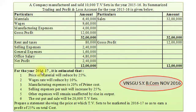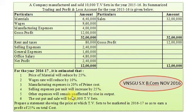For the year 2016-17, it is estimated that: 1. Price of Material will reduce by 25%. Wages Rate will reduce by 10%. 3. Manufacturing Expenses — 20% of Prime Cost. 4. Selling Expenses per unit will increase by 25%. Other expenses will remain unaffected by rise in output. And 6. The output and sale will be 20,000 TV sets. Prepare a statement showing the price at which TV sets is to be marketed in the year 2016-17, so as to earn a profit of 25% on total cost.